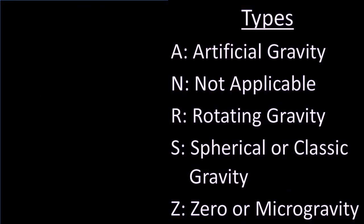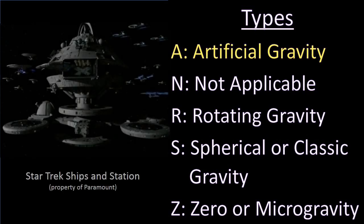So let's go ahead and move into our classification system. First type is types. We have artificial gravity, situations where it's not applicable, rotational gravity, spherical or classical gravity, and zero or microgravity.